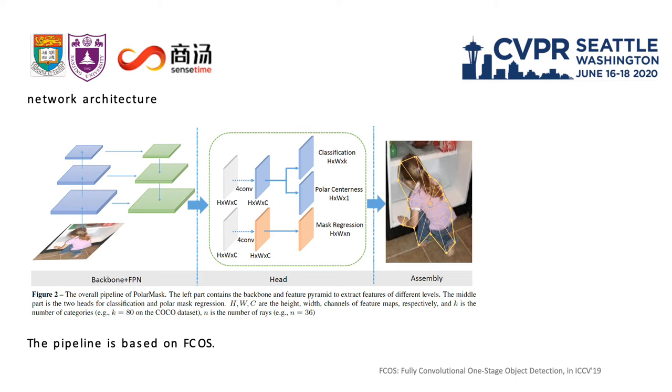PolarMask can be viewed as a generalization of FCOS. In other words, FCOS is a special case of PolarMask, since a bounding box can be viewed as the simplest mask with only four directions.